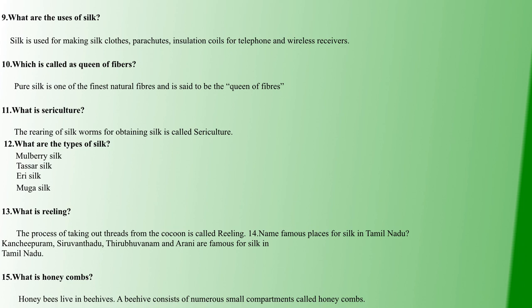Tenth question: what is sericulture? Sericulture is the rearing of silkworms for obtaining silk. There are four types of silk: mulberry silk, tussar silk, eri silk, and muga silk. In Tamil Nadu, Arani and other places are famous for silk production.